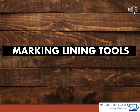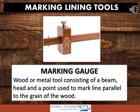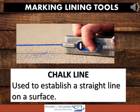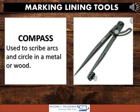Next are the marking and lining tools. First is the pencil: used to lay out or mark cutting lines for drawing projects. Marking gauge: a wood or metal tool consisting of a beam, head, and a point, used to mark parallel lines to the grain of the wood. Chalk line: used to establish a straight line on a surface. Divider: a tool with two metal legs used to lay out an arc and circle or step up divisions on a line. Compass: used to scribe arcs and circles in metal or wood.